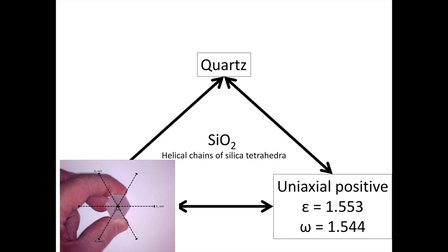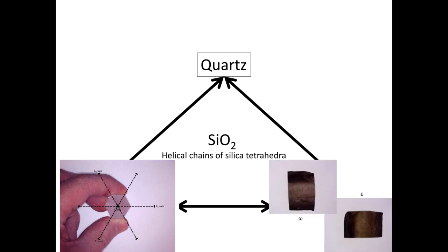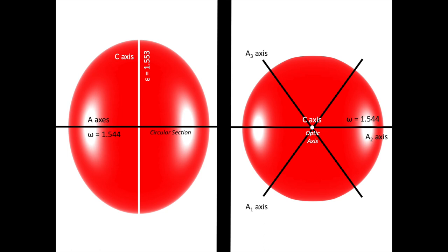Here's an example of pleochroism in a slice of citrine, looking at pleochroic end member colors associated with refractive index omega and refractive index epsilon. When thinking about the optical properties of quartz, we want to talk about the optical indicatrix — a three-dimensional representation of the refractive indices of our quartz. As quartz is uniaxial, refractive index epsilon is aligned with the C crystallographic axis, and refractive index omega is aligned with the plane of the A axes. For more in-depth information, check out optical mineralogy uniaxial minerals.